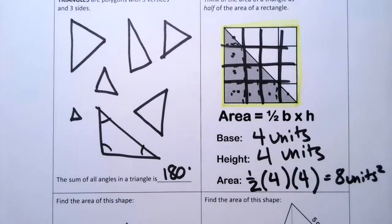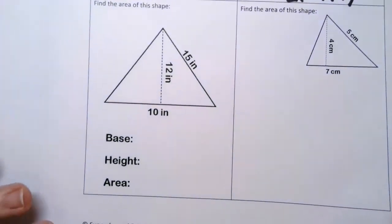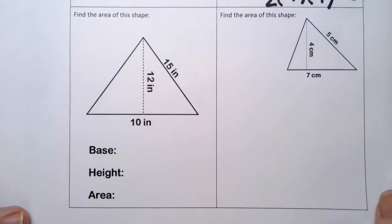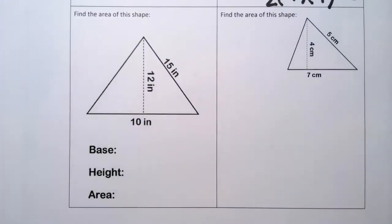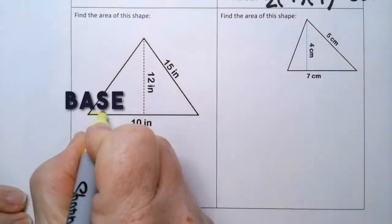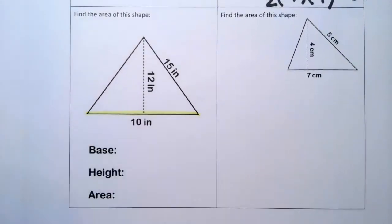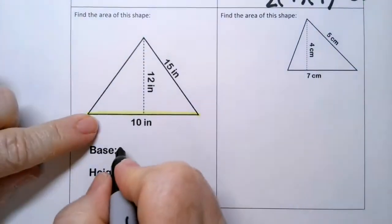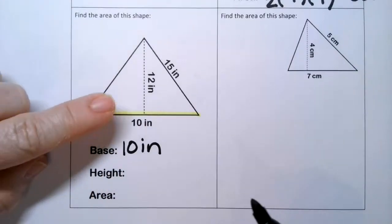Good. Okay. So let's try some real examples. Okay. So the base is here of our triangles, what it's sitting on. So the base is going to be 10 inches.